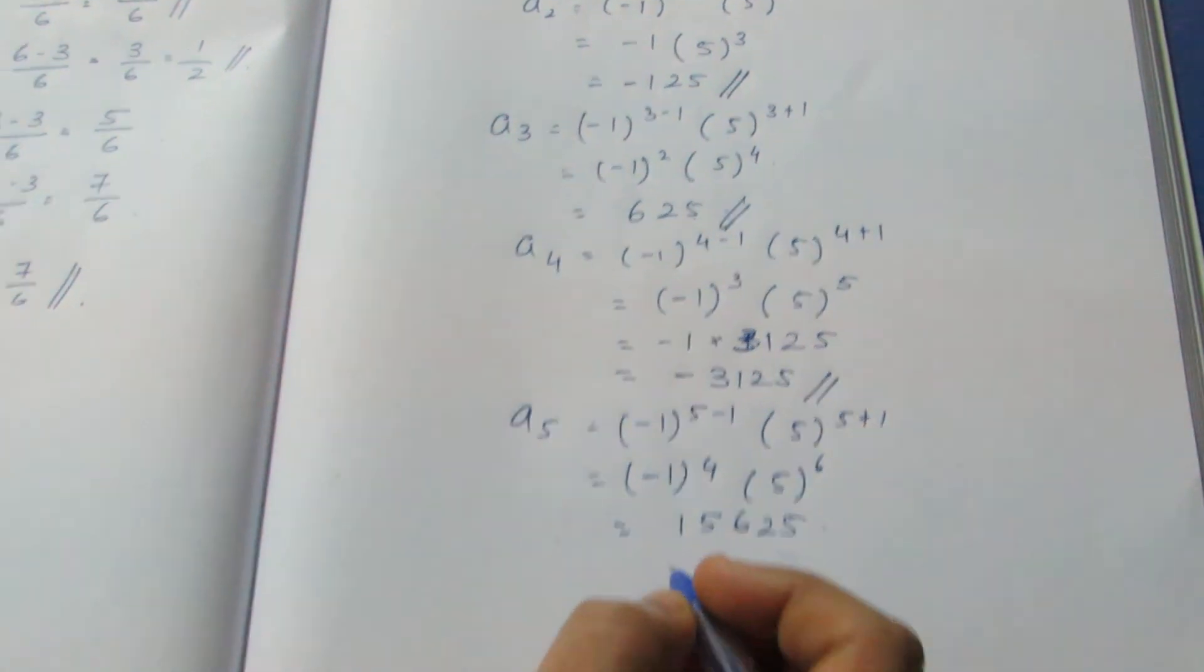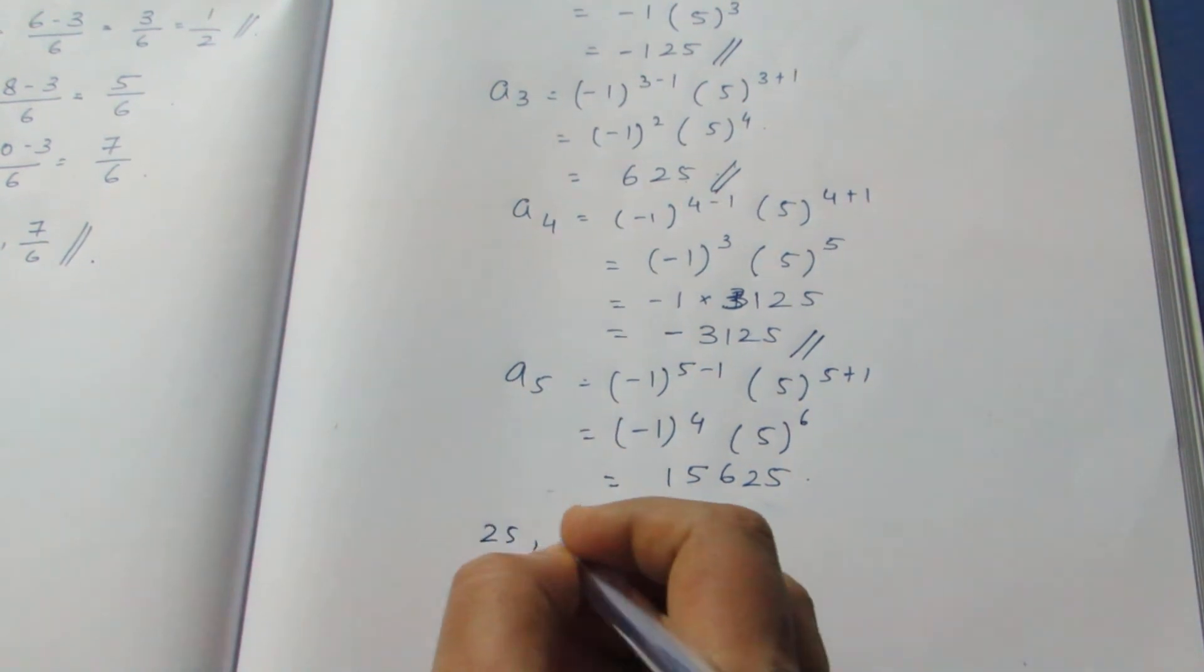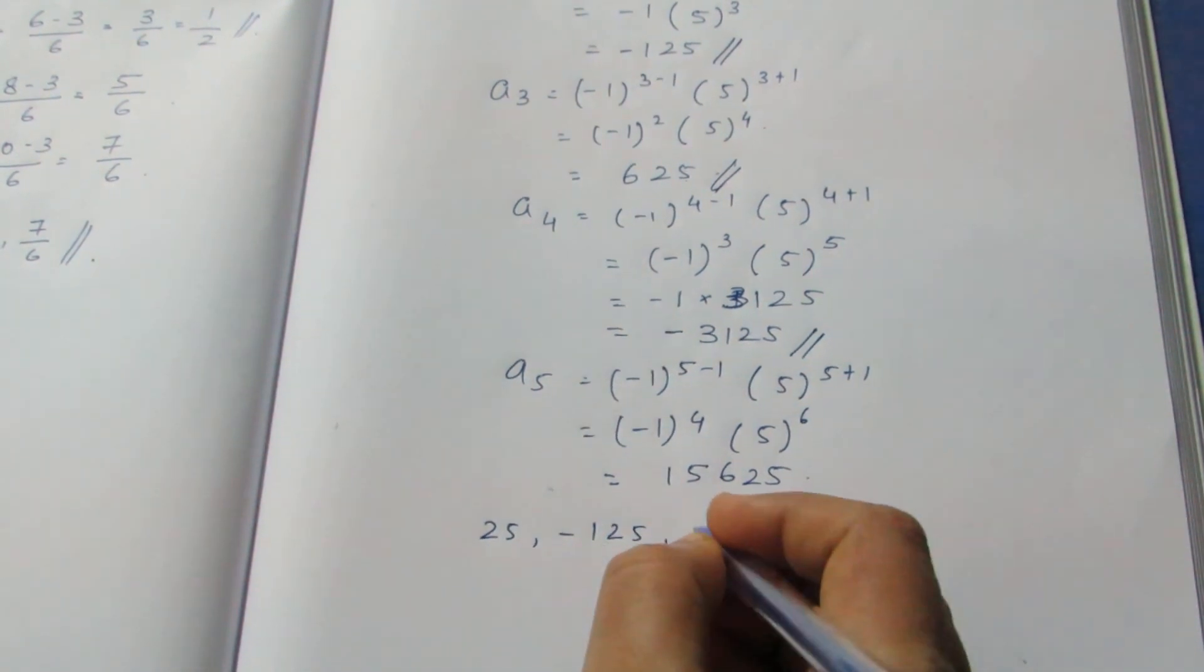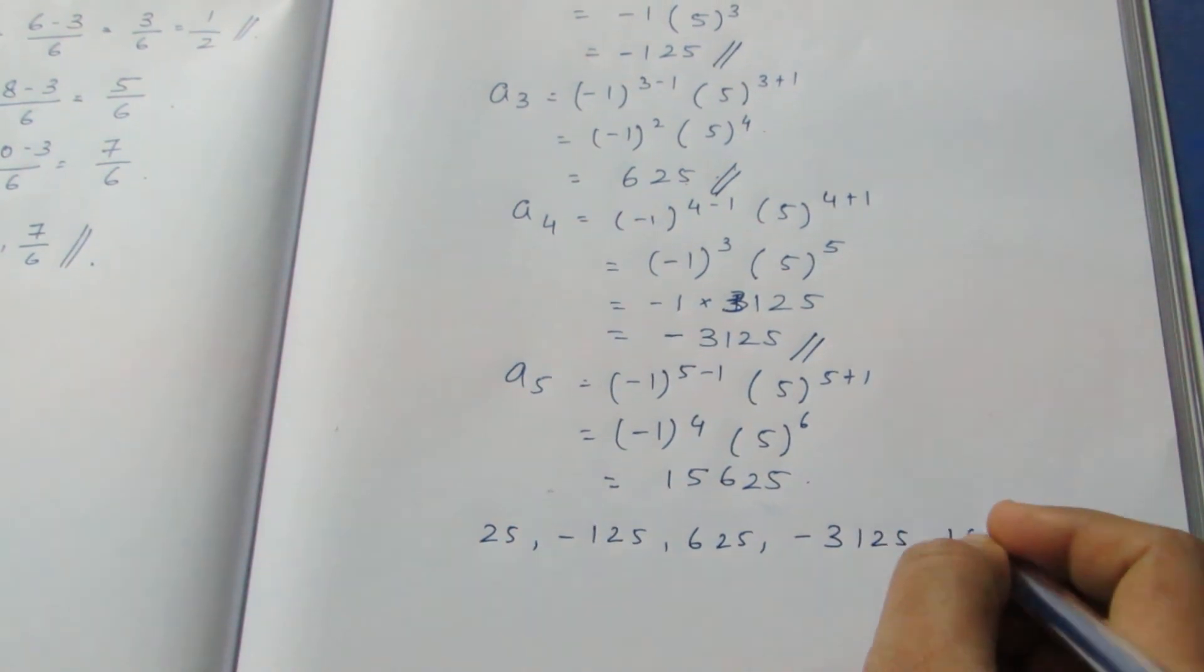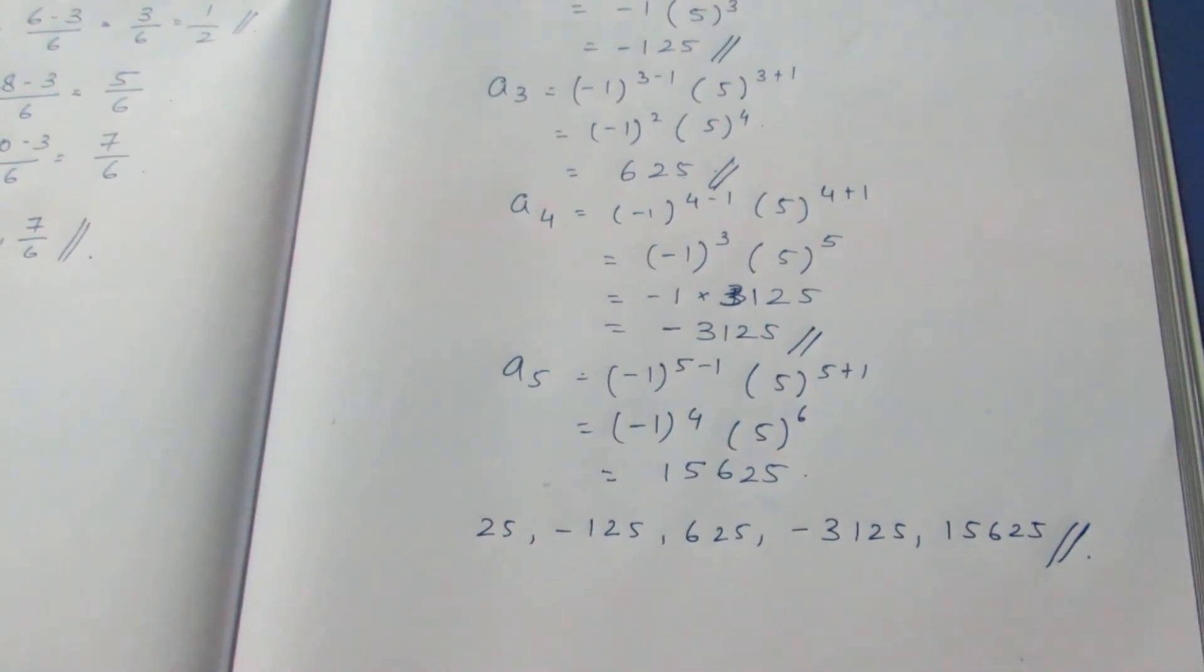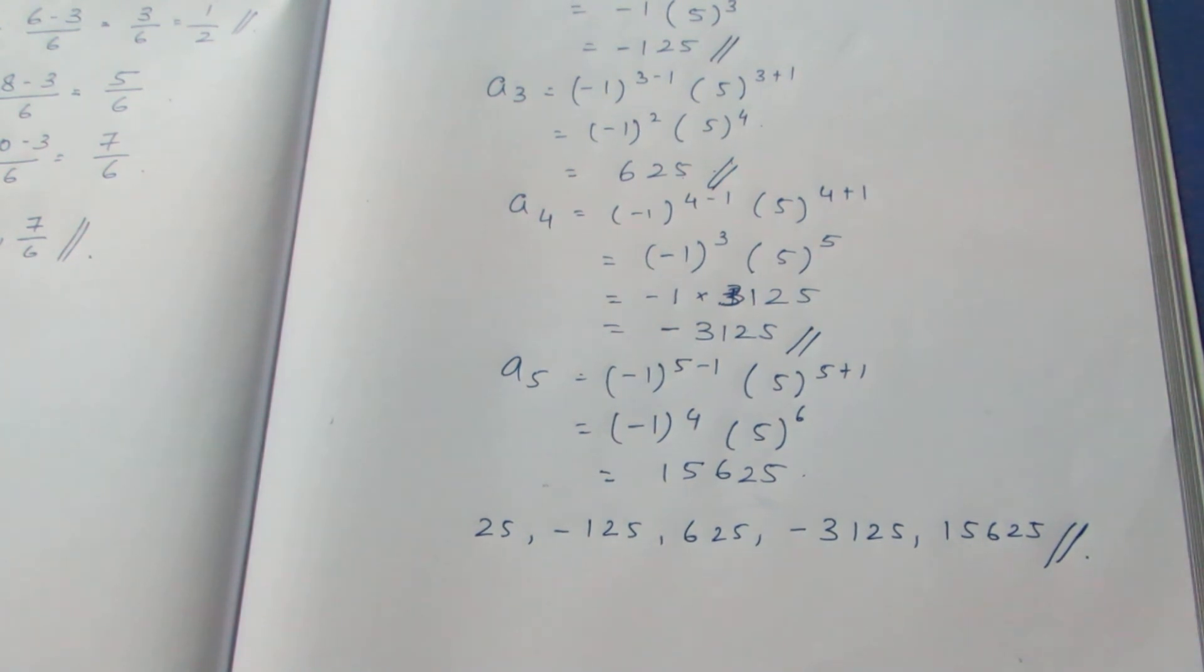Now we have found all the 5 terms. All the 5 terms, that is 25, -125, 625, -3125, 15625, are the first 5 terms of the given nth term. That's all with the sum. Thank you.